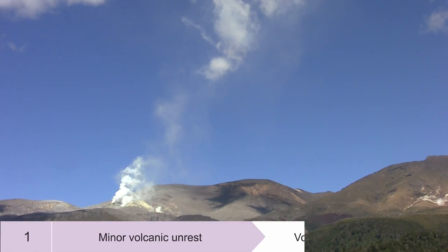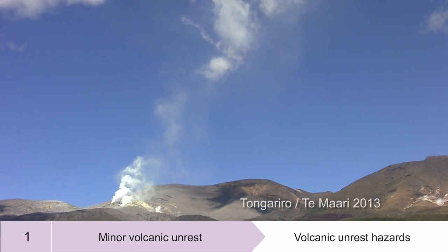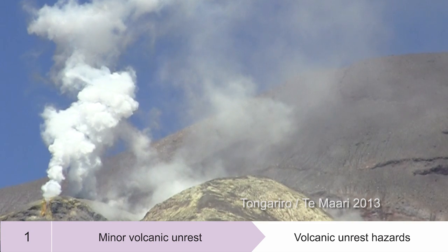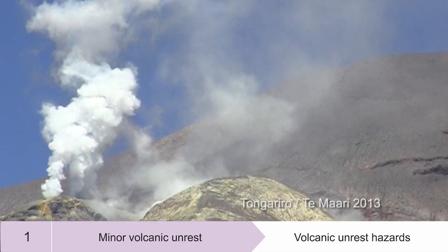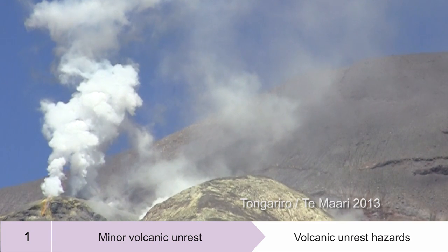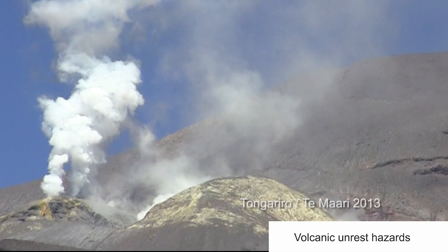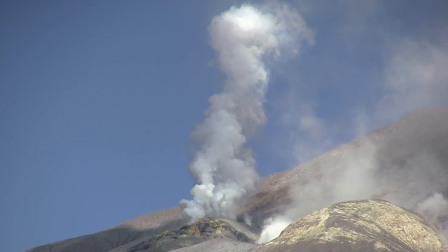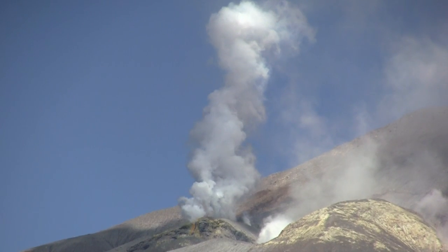A volcano at alert level one is experiencing minor unrest, and there may be some volcanic unrest hazards like geothermal systems, volcanic gases or earthquakes.